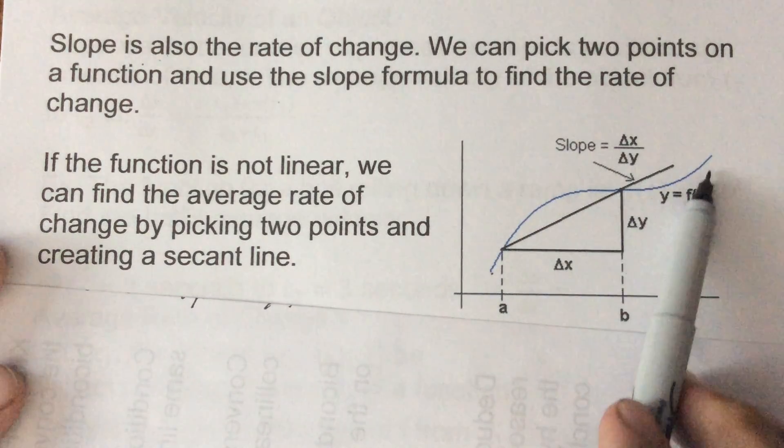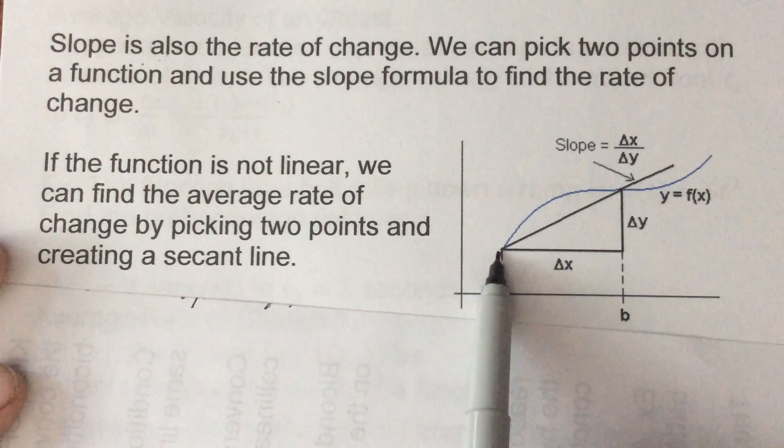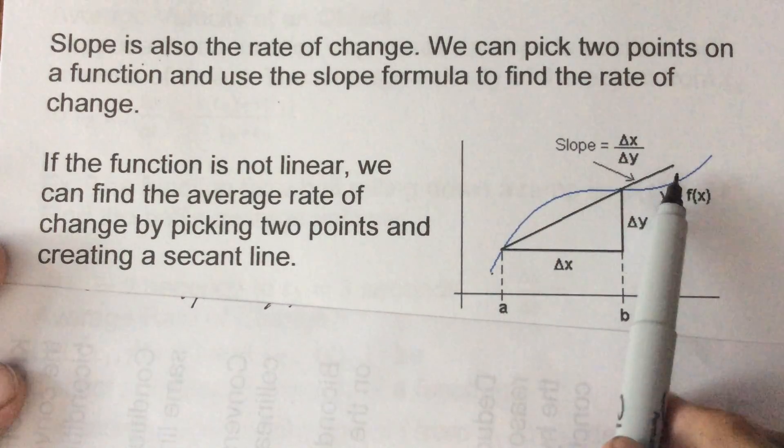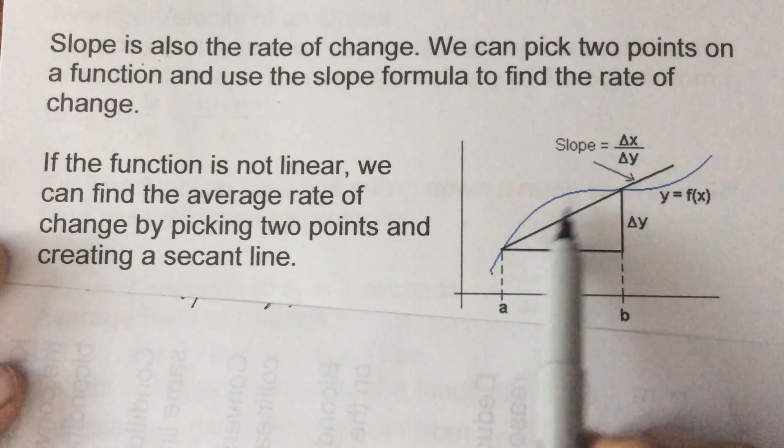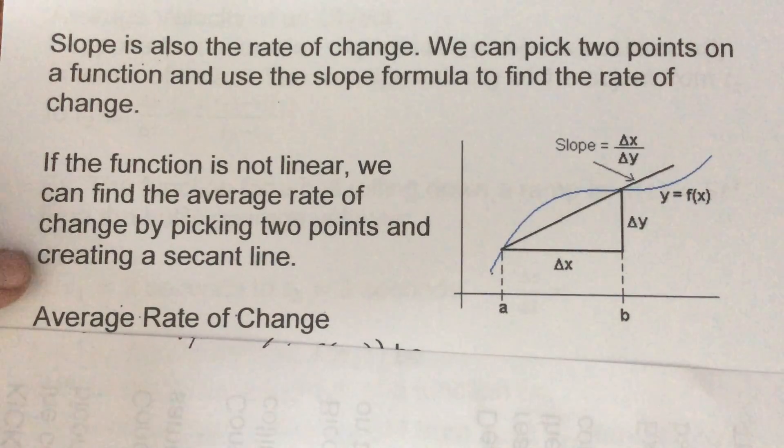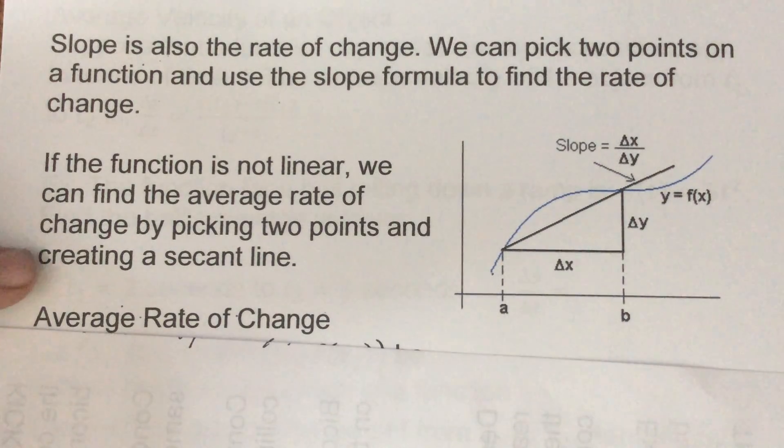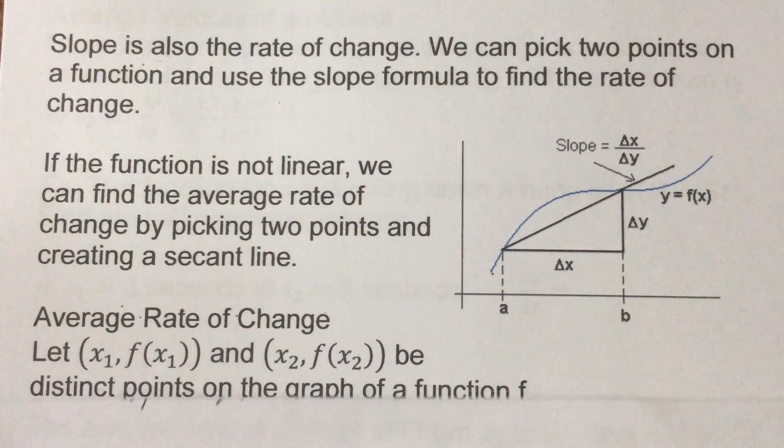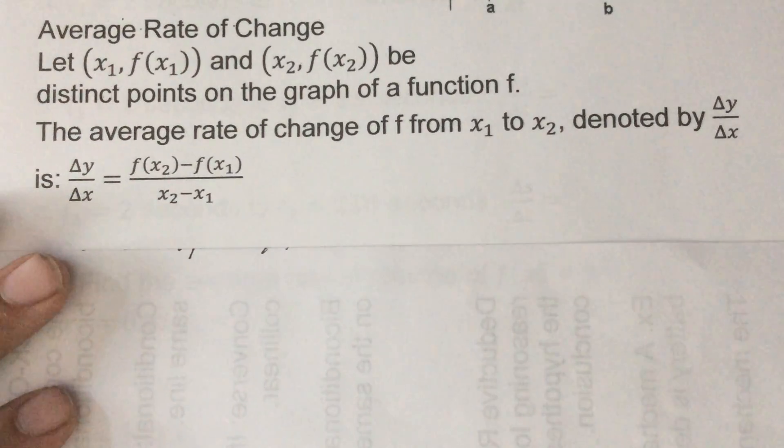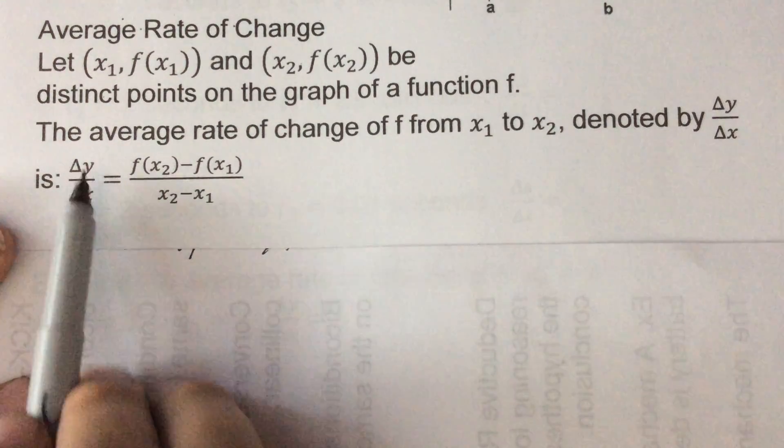Where what we're doing now is we're always finding the average slope, so between two points whether it's here and here, here here, here and over here - we're finding that average slope. What that's called is a secant line, so it's a line connected between two points on a curve.